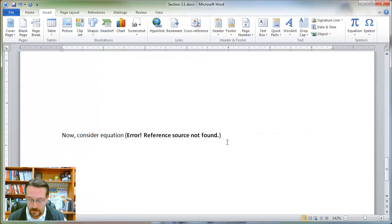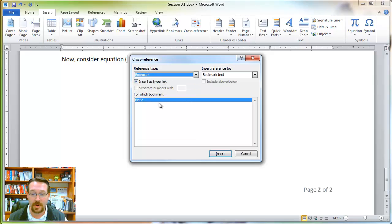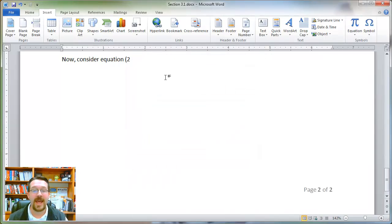So later on, if I want to consider a specific equation, I put in my delimiter, and then I'm going to Insert and Cross Reference, select a bookmark for my reference type, select the bookmark that I wanted, and click Insert, Close Parenthesis. Now I can refer to that equation directly.